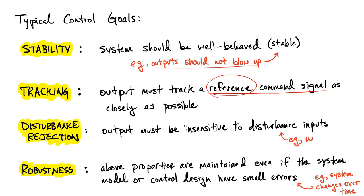Another important goal for control design is rejecting disturbances. If there's some disturbance affecting our system — imagine a plane flying in a lot of wind — ideally we'd still like to maintain our altitude despite a strong crosswind. We've earmarked that input as the W input, something we don't always get to design, so we need to make sure we're relatively insensitive to that disturbance input.